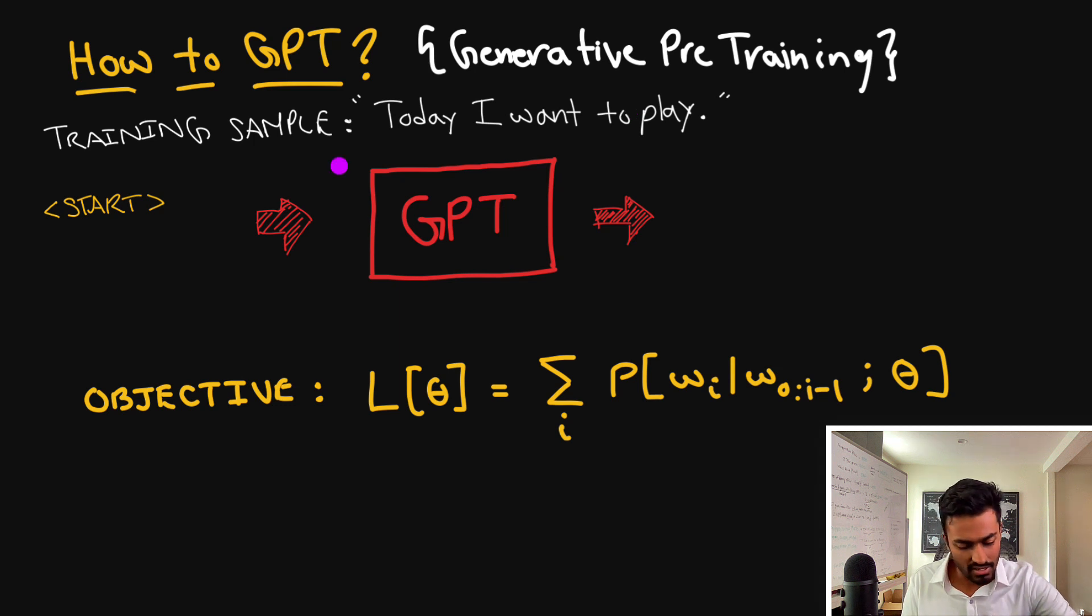Now we have a start token which we now input to this untrained GPT architecture. When we start we want to say okay right here we wanted to generate the word today. Once we generate today we're going to now put that as the input for the next time step where we pass it into GPT and it should do its little magic in here and try to predict I. Now every single time we do this we want to tune the parameters such that it is more likely to produce this word I. In the next time step we want to generate the word want. Then in the next time step two. And then in the next time step play.